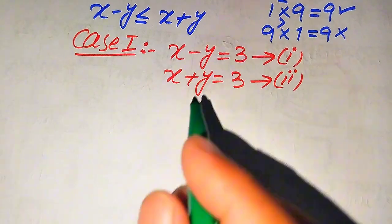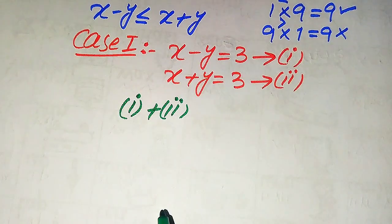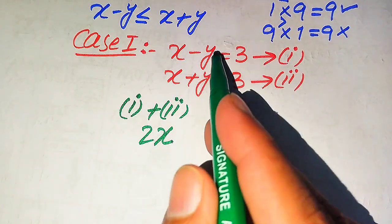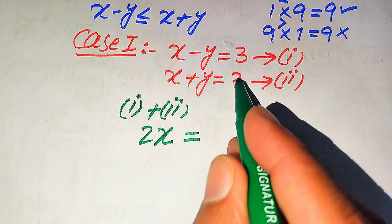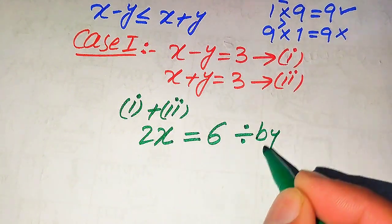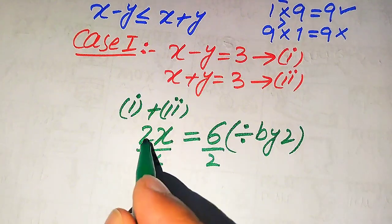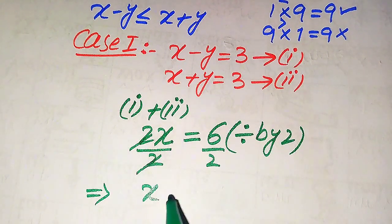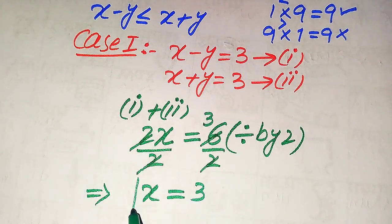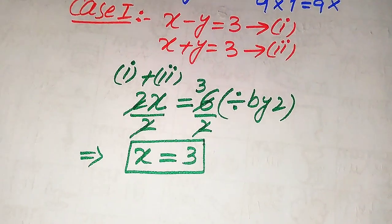We sum equation 1 and equation 2. The x plus x gives 2x, and the minus y and plus y cancel out. We get 3 plus 3 equals 6, so 2x = 6. Dividing both sides by 2, the 2s cancel and we get x = 3.